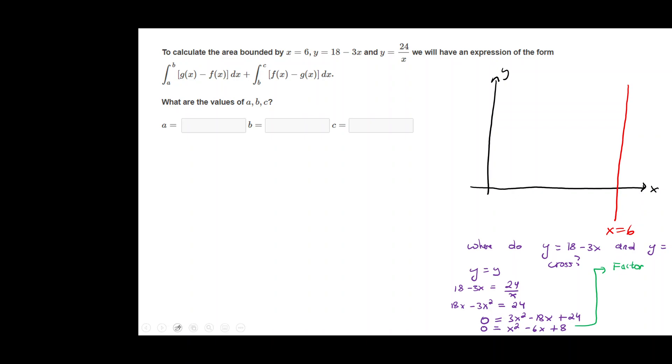We'll factor the quadratic using the product and sum method. We will have x and x mystery numbers. When the mystery numbers multiply, they give us positive 8. And when they add, they give us negative 6. So that's going to be negative 2 and negative 4. And that means our two solutions are x is equal to 2 and x is equal to 4. Those are the locations where the curves cross.